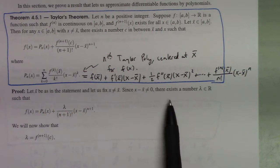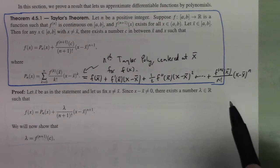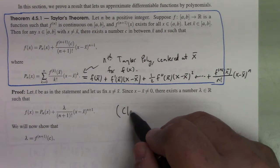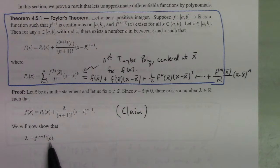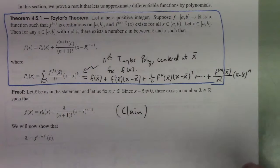This is the claim — it has not been shown yet. Furthermore, the claim is that lambda is in fact f^(n+1)(c) for some c. Let's see why that's true.